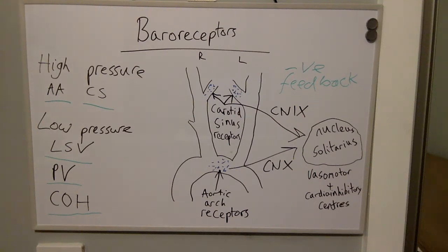As a result of increased transmission along cranial nerves 9 and 10, there is in turn reduced sympathetic outflow and increased parasympathetic activity. This will result in a reduction in systemic vascular resistance and hence a reduction in blood pressure.